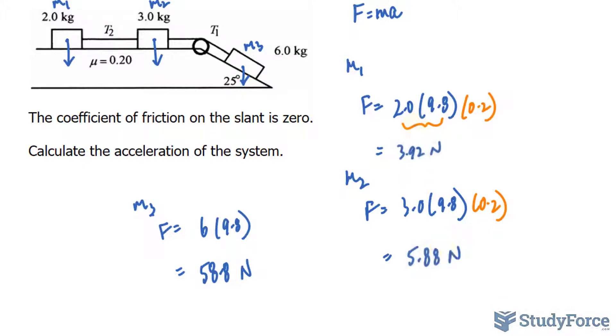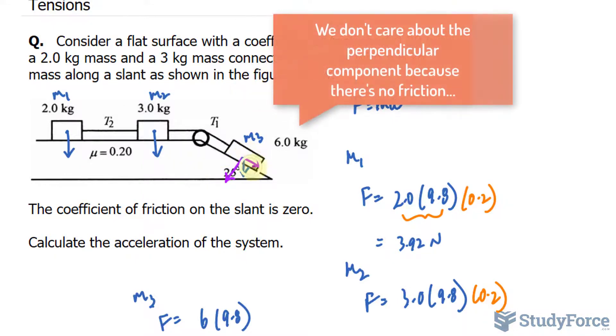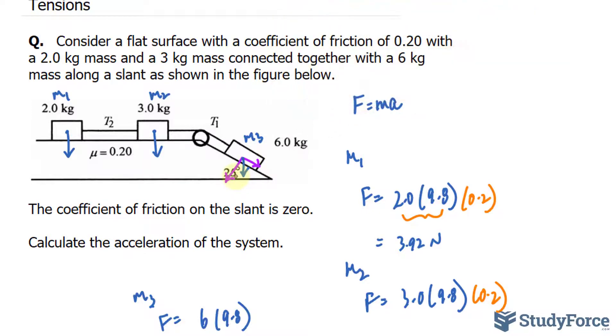The next thing that I will do is break this vector down into its component. So we have the component that is going along the plane, and a component that is perpendicular to the plane. What I need to find out is the magnitude of this component specifically. So how do we do that?